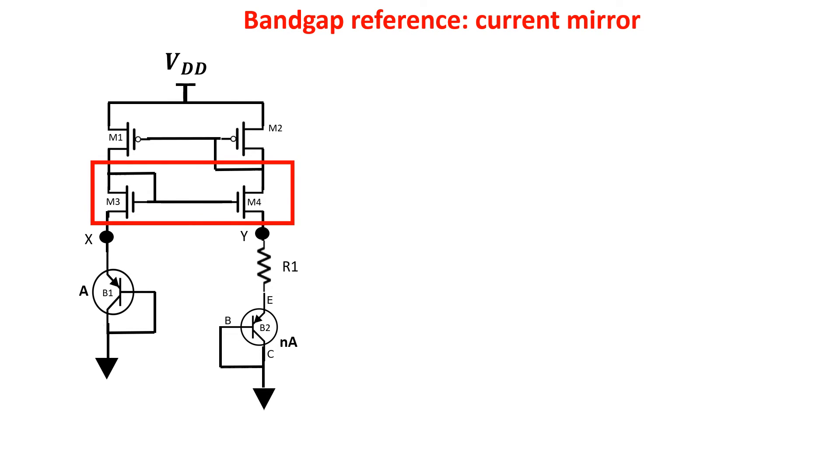We saw we cannot take here the Vref because Vy is equal to Vx, so is a CTAT voltage. But we remember that since Vx is equal to Vy, the voltage drop on R1 is VT log N, and therefore the PTAT current VT log N over R1 is created.